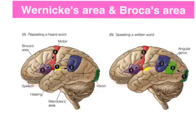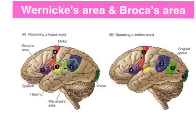When we're repeating a word we hear, the process starts in the auditory cortex in the temporal lobe, which processes the sound. We then move to Wernicke's area, which creates a plan of what we're going to say, and then transmits a message to Broca's area, which produces the speech via activation of the vocal apparatus in the motor cortex.